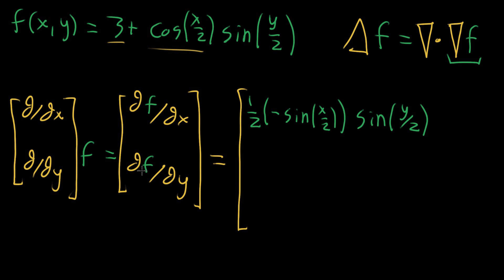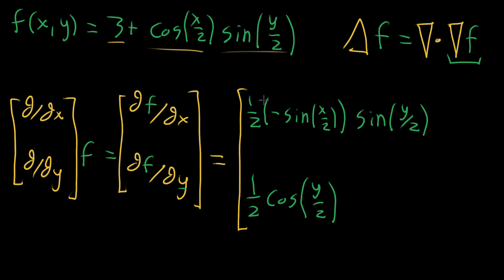For the second component, the partial derivative of f with respect to y: three is still a constant, and cosine of x over two also looks like a constant since x is treated as constant. The sine of y has a derivative of cosine, and we pull out that one-half from the chain rule. So the derivative of the outside is cosine of y over two, multiplied by the original constant cosine of x over two. So the second component is one-half cosine of x over two times cosine of y over two.